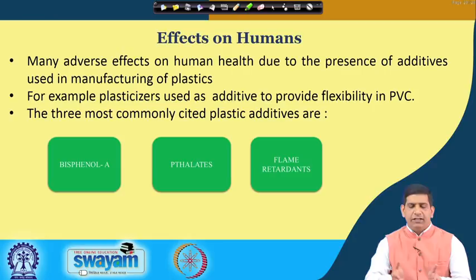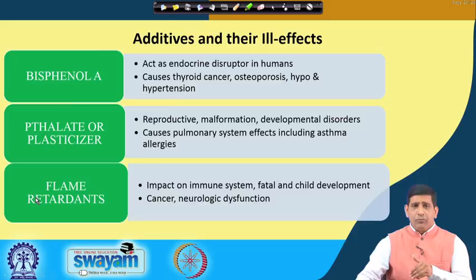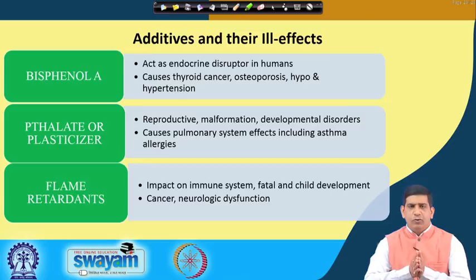These three major categories — bisphenol A, phthalates, and flame retardants — have all been documented to have adverse human health impacts in the literature. Bisphenol A acts as an endocrine disruptor in humans, impacting our endocrine system. It can cause thyroid cancer, osteoporosis, and both hypo and hypertension. That is why many plastics these days are trying to move away from BPA.